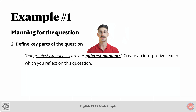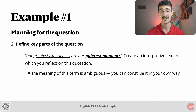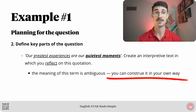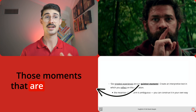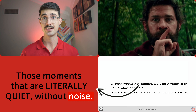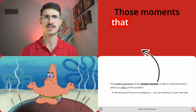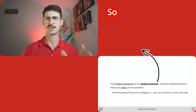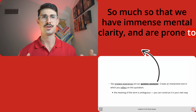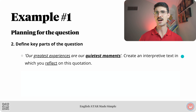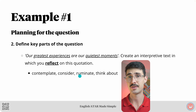The next key part is 'quietest moments.' The meaning of this term is also ambiguous — you can interpret it your own way. For example, I might interpret 'quietest moments' to mean those moments that are literally quiet without noise, or I might interpret 'quietest moments' to refer to those moments that are quiet in a psychological sense — so much so that we have immense mental clarity and are prone to epiphanies as a result. The final key part is the word 'reflect.' Some synonyms: contemplate, consider, ruminate, think about.